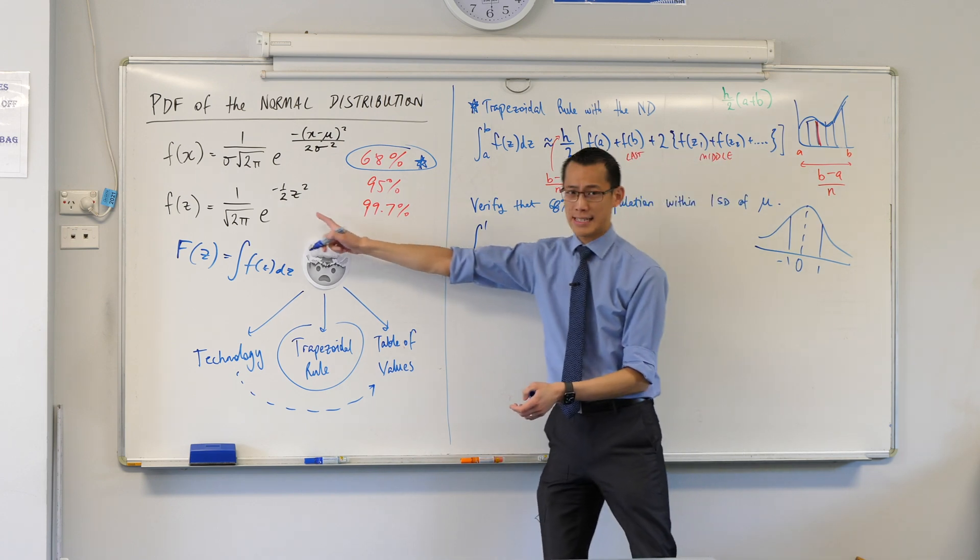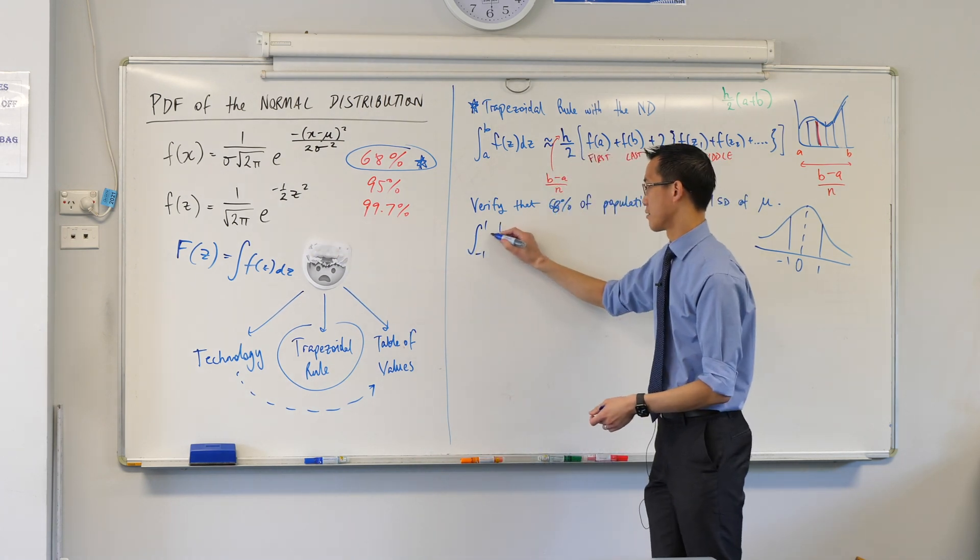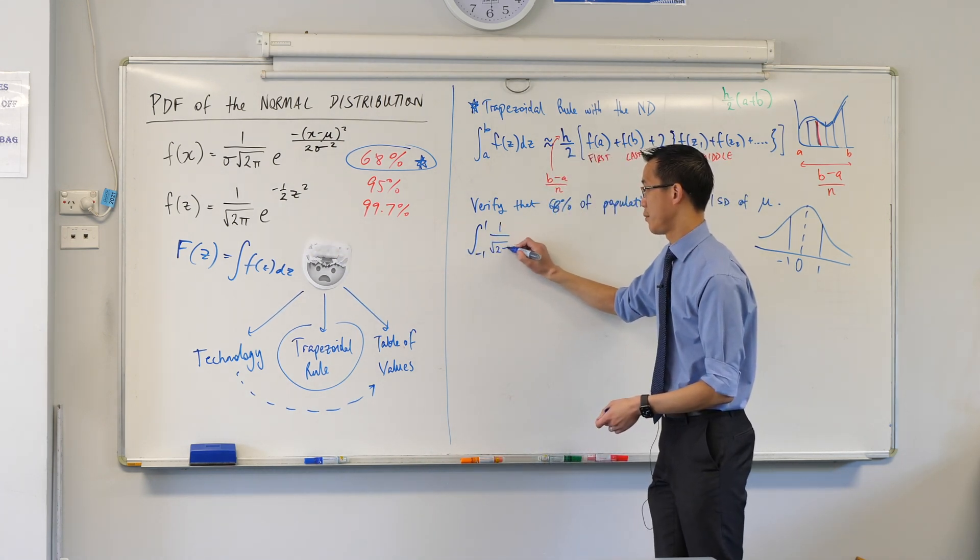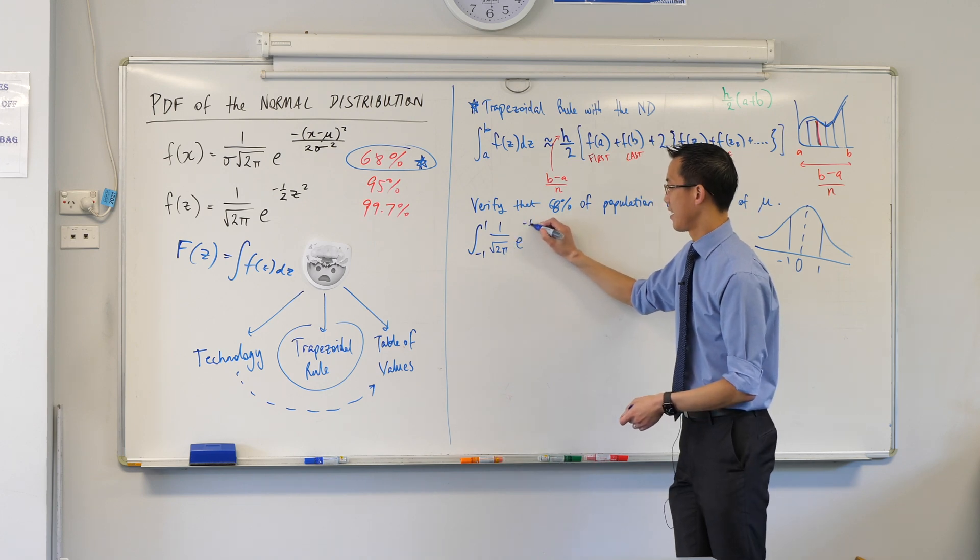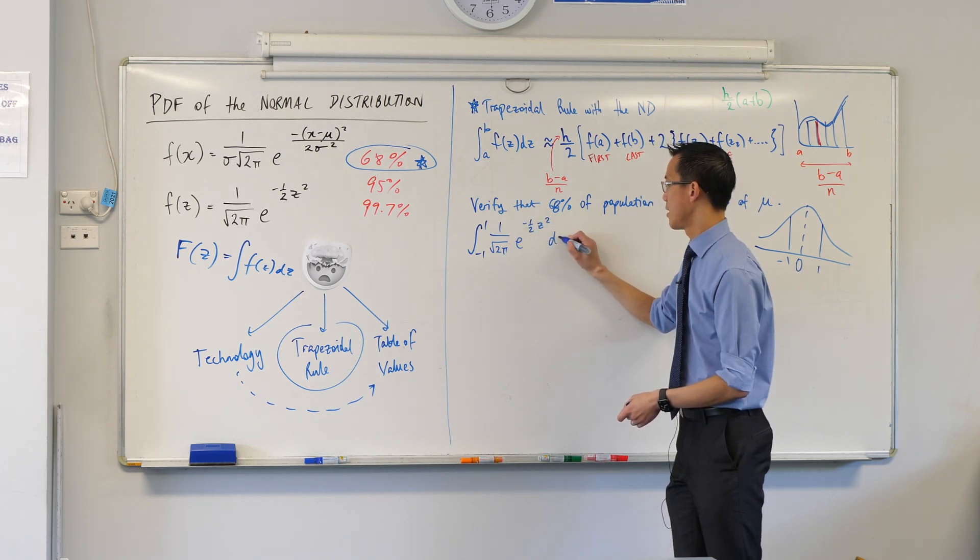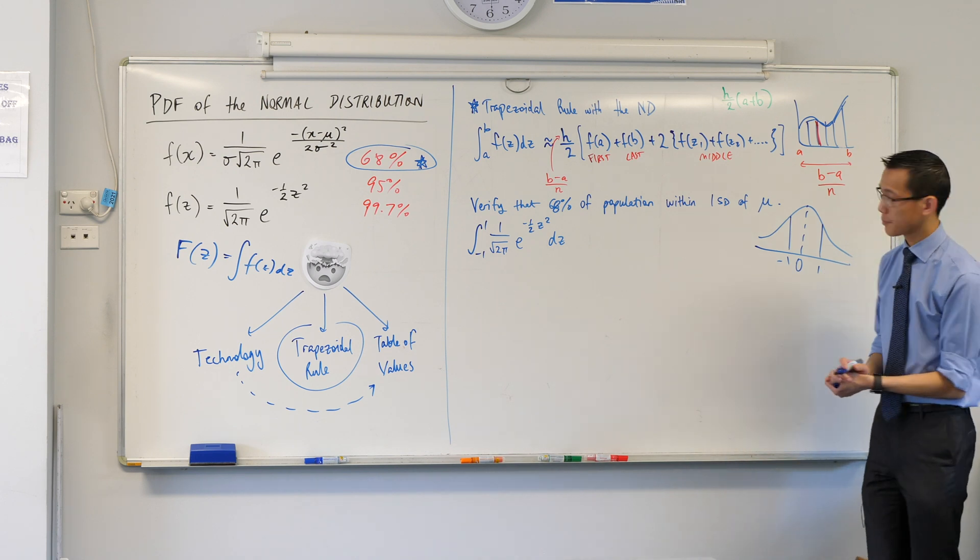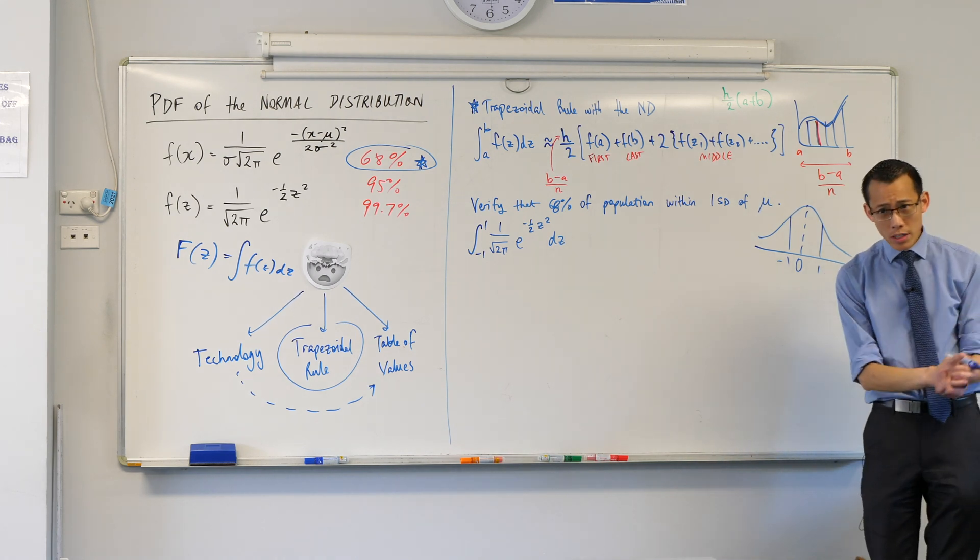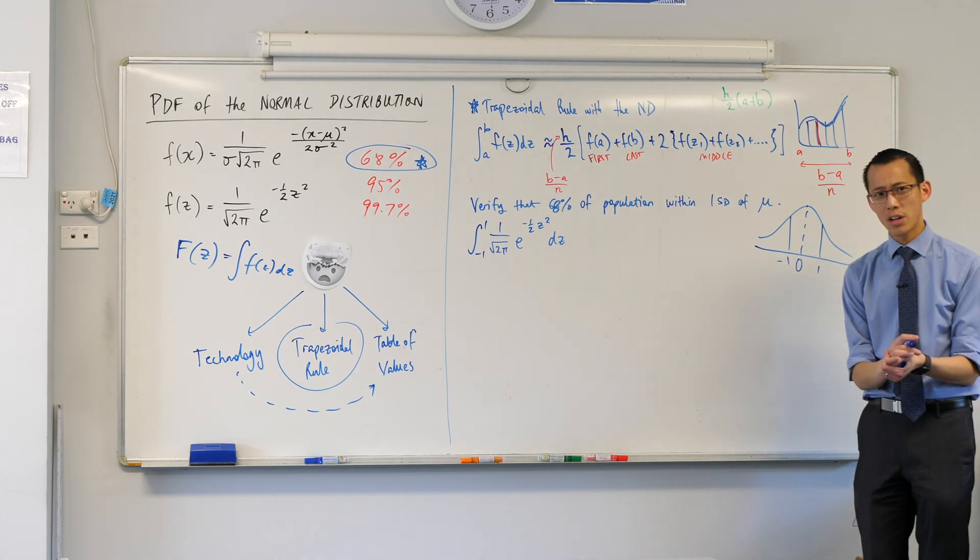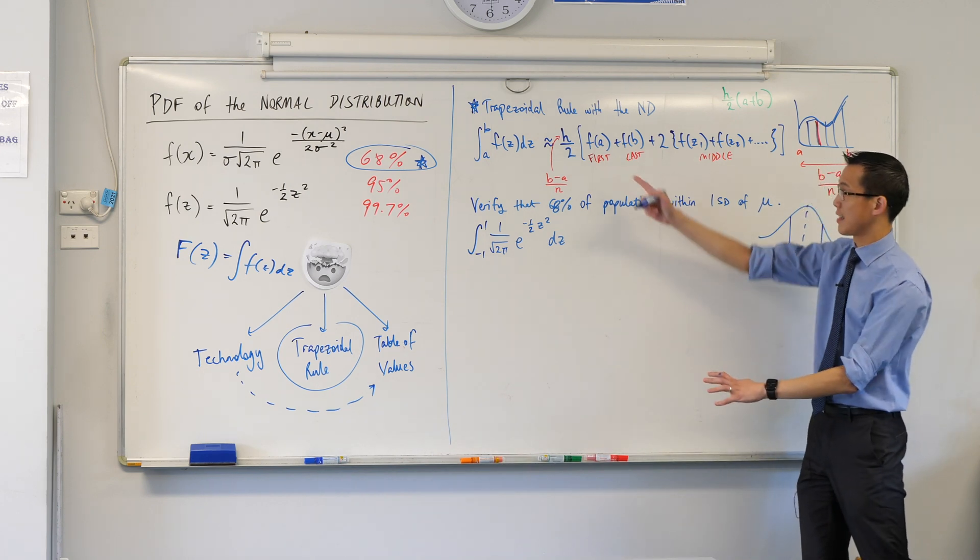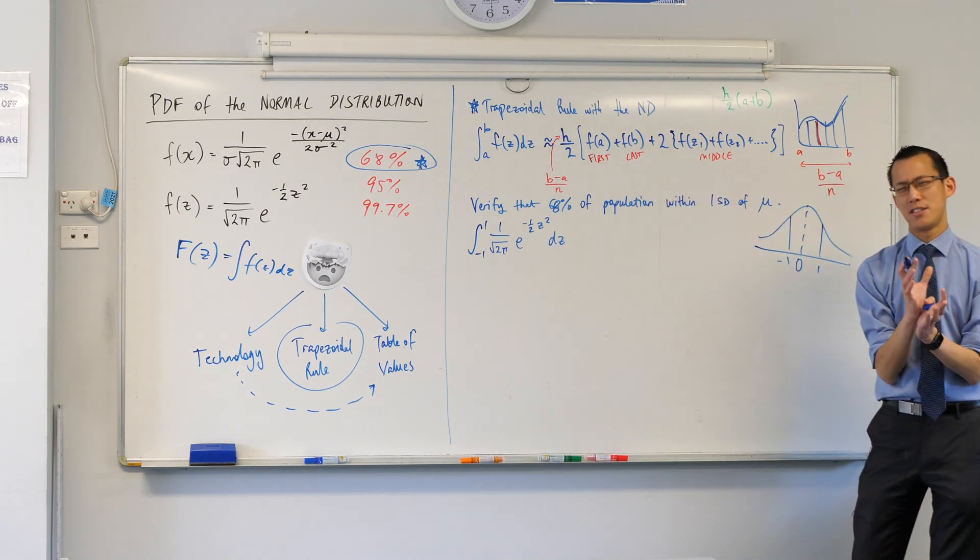And then I've got this as my function, so I'm going to write that, one on root two pi e to the negative a half z squared dz. This is what I'm after. Now what I want to do here is I want to look at this before I just rush to start putting numbers in, I want to see if I can do this any better.